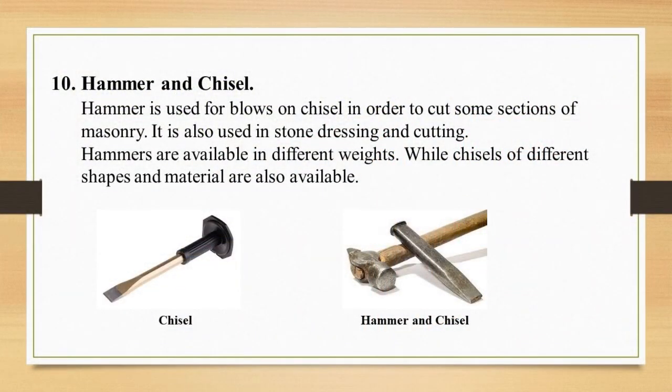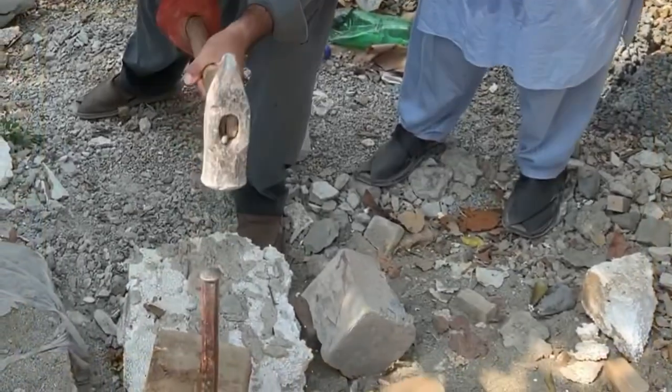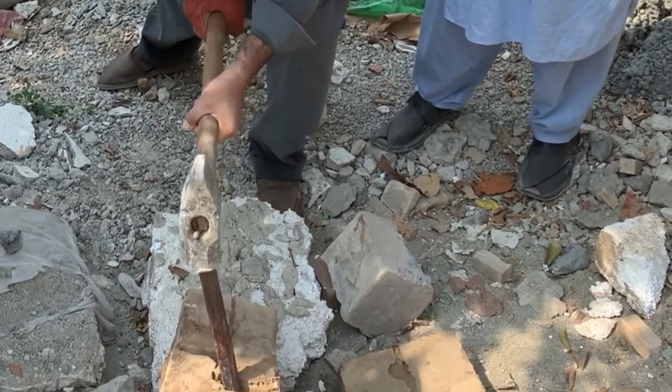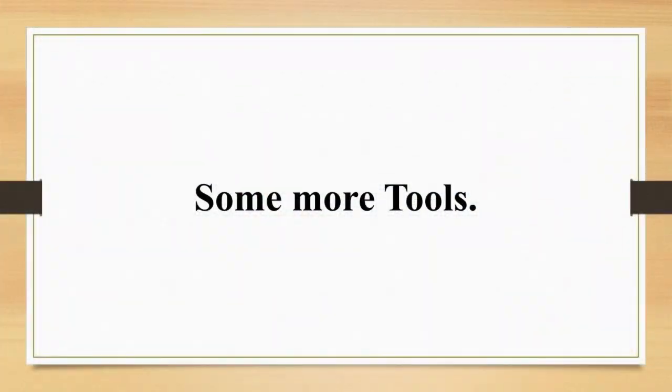The next tool is the hammer and chisel. A hammer is used to strike the chisel in order to cut sections of masonry at a desired location. It is used in stone dressing and cutting. Hammers are available in different weights, while chisels of different shapes and materials are also available. Here you can see how it is used for cutting.